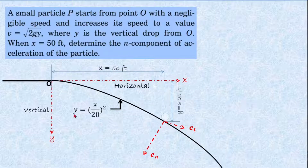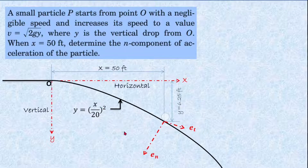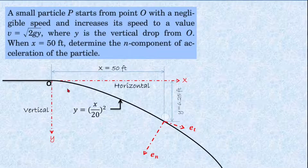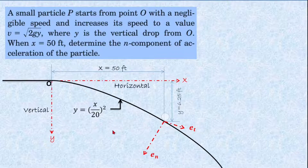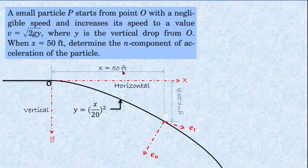To solve this problem, we need to know the concepts of normal acceleration related to velocity and the radius of curvature. The particle travels along a path defined as a function of x, where y = (x/20)². This is the path of the particle as it starts from rest at point O with negligible zero velocity.